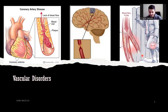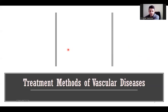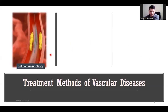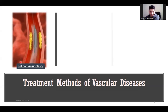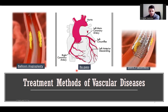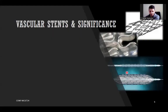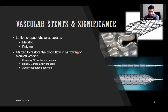So vascular disorders must be treated immediately before it is too late. There are three main treatment methods of vascular disorders, which are balloon angioplasty, bypass operation, and stent placement. A stent is a metallic or polymeric lattice-shaped tubular apparatus, as seen in these images. They can provide restoring the blood flow in occluded vessels. Stents are utilized in coronary or peripheral diseases, renal or carotid arterial stenosis, and abdominal aortic aneurysm.